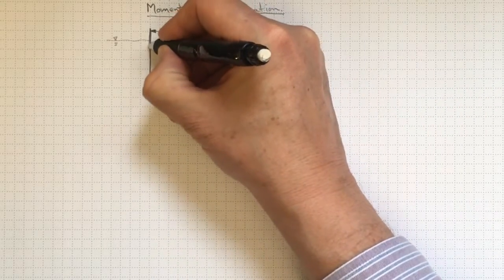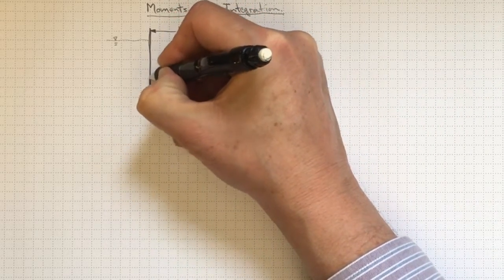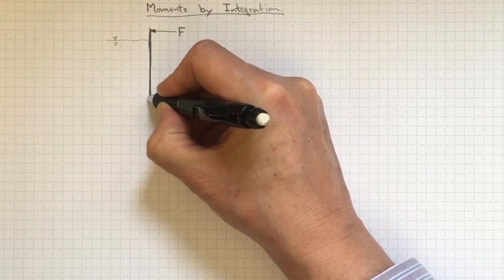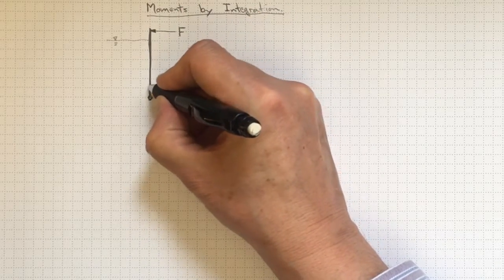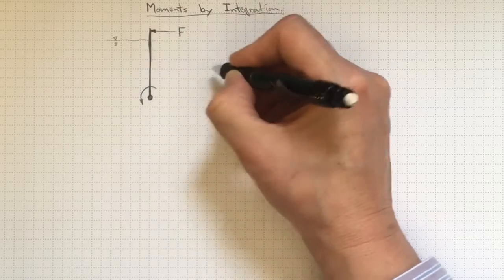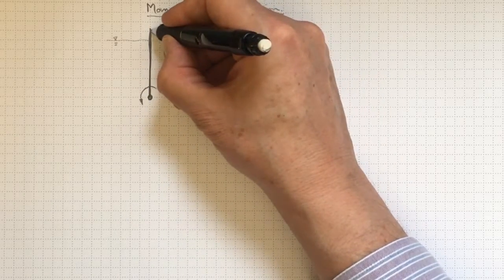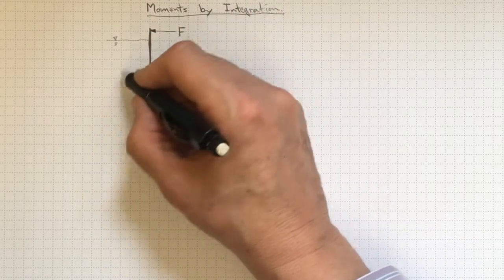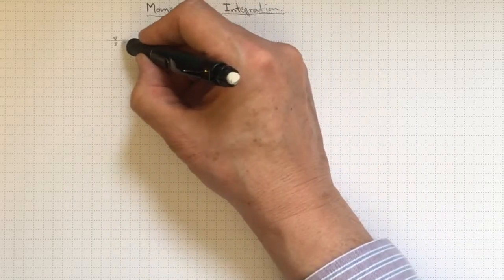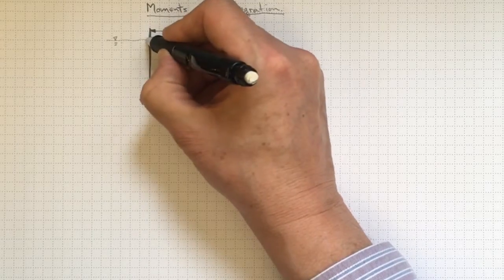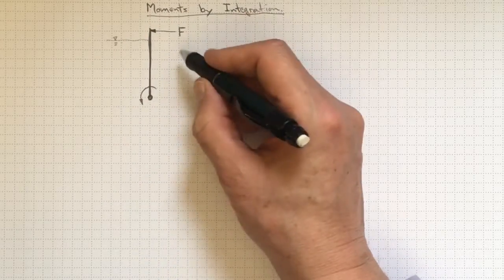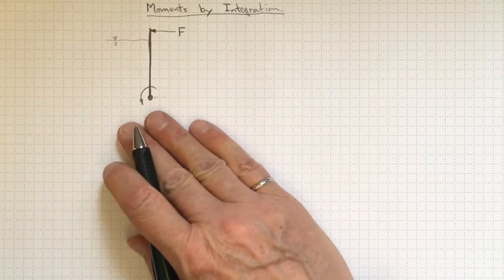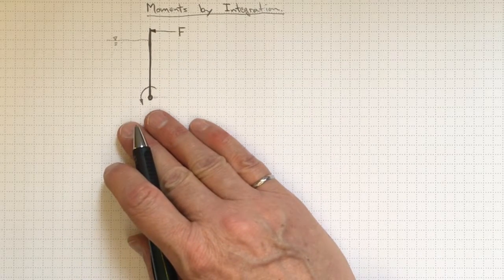Now let's consider we had a gate something like this, and it's held in place by a fixed hinge down here, so it's free to rotate around that hinge. We've got this force applied up here at the top to keep it from falling over this way due to the pressure of the water that's sitting behind the gate. So we've got a free body diagram. We'll have another force potentially down here, but we're going to ignore that for the moment and just concentrate on the moment.